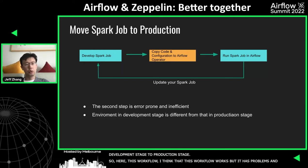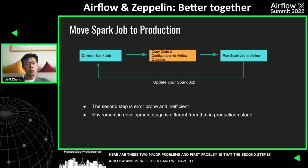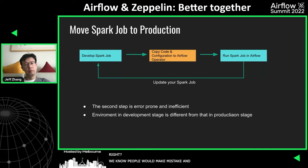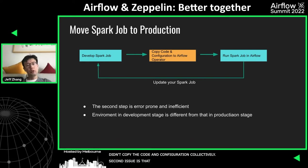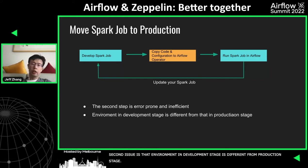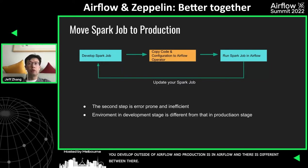This workflow works but it has problems. I list two major problems. The first problem is that the copy step is error-prone and inefficient. We have to manually copy code and configuration, and people usually make mistakes, so it's very possible that you didn't copy the code and configuration correctly. The second issue is that the environment in the development stage is different from that in the production stage, because you develop your job outside Airflow but the production environment runs inside Airflow. This difference may cause your job to fail in the production stage.